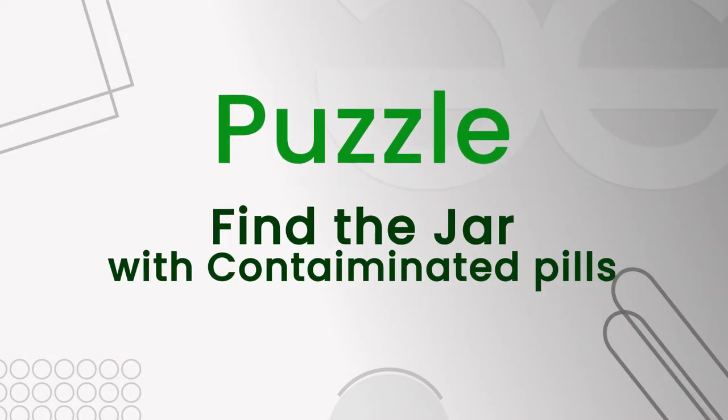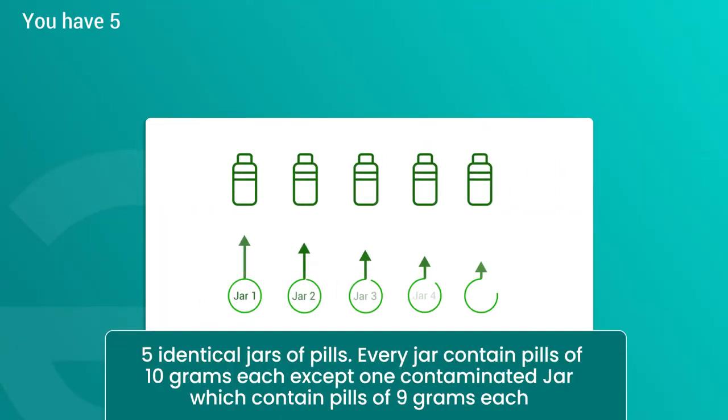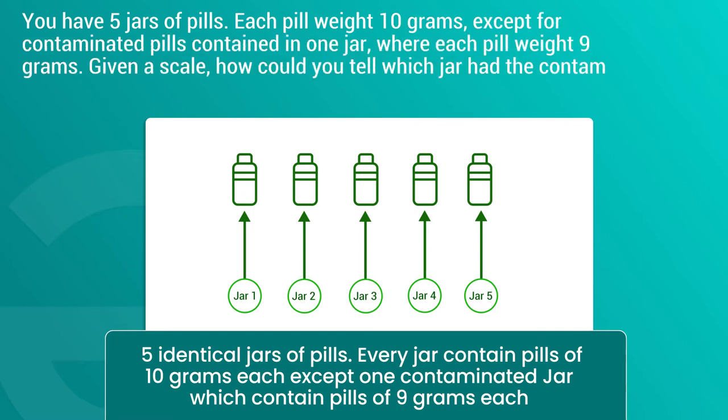Puzzle. Find the jar with contaminated pills. You have 5 jars of pills. Each pill weighs 10 grams, except for contaminated pills contained in one jar, where each pill weighs 9 grams. Given a scale, how could you tell which jar had the contaminated pills in just one measurement?